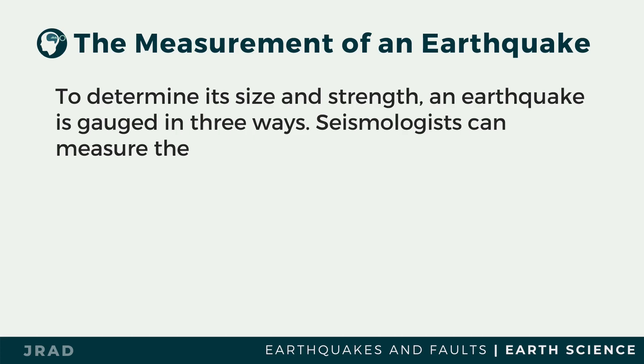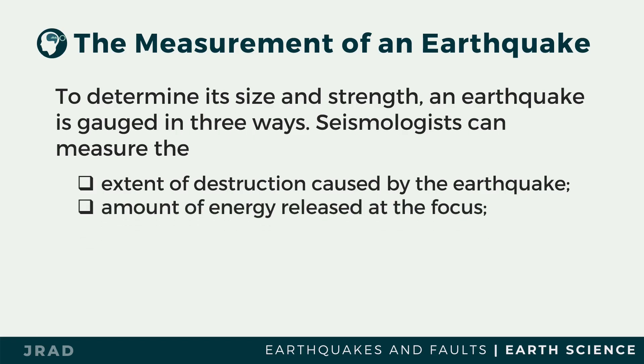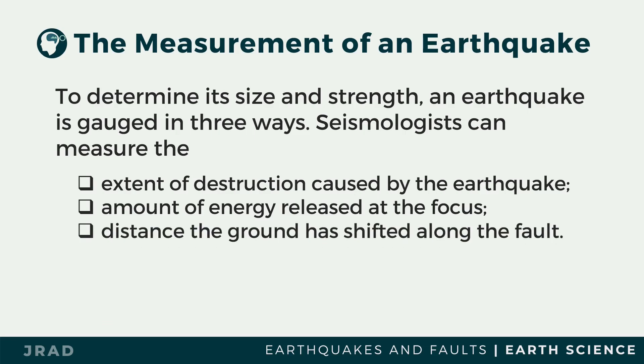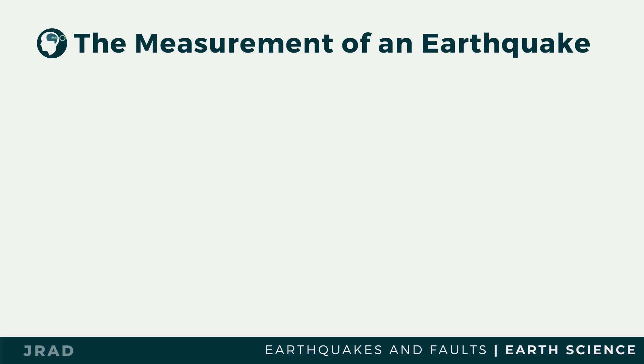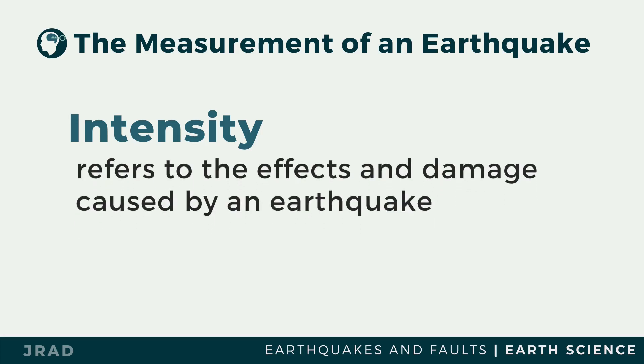To determine its size and strength, an earthquake is gauged in three ways: seismologists can measure the extent of destruction caused by the earthquake, the amount of energy released at the focus, and the distance the ground has shifted along the fault. An earthquake is described by its intensity and magnitude. Historically, earthquakes were first described in terms of the amount of damage, called intensity, which is determined by actual observation or on-site inspection of the affected areas, including interviews with the people.